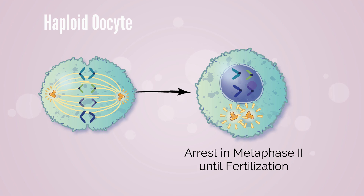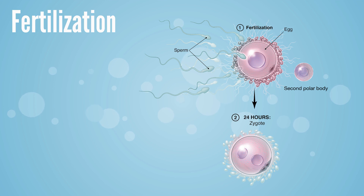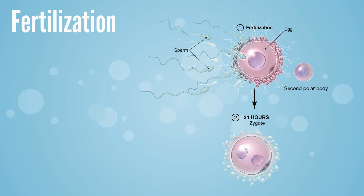The haploid oocyte now goes through mitotic division and will arrest in metaphase and be expelled as a mature oocyte. It remains arrested in metaphase of the second meiotic division until fertilization occurs. With fertilization, the haploid oocyte and spermatocyte combine to form a diploid cell once again.